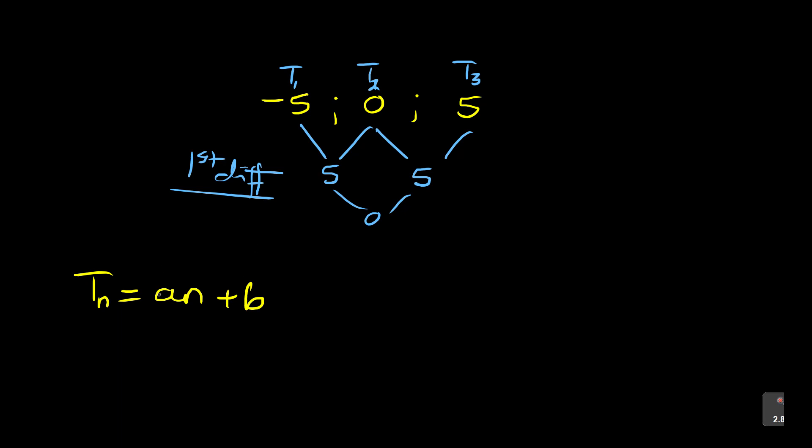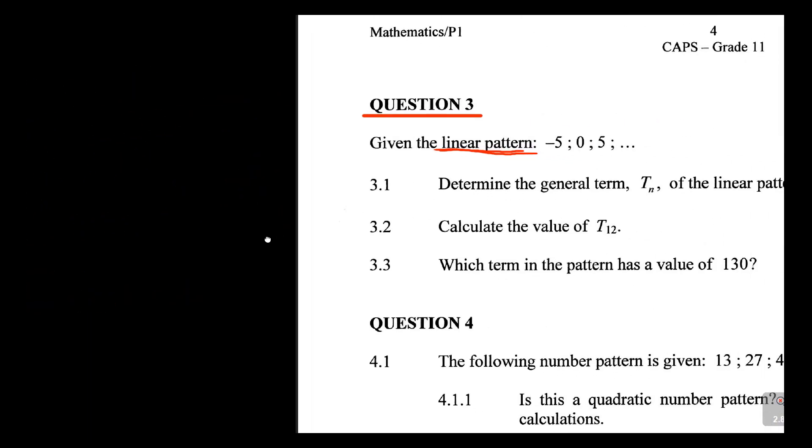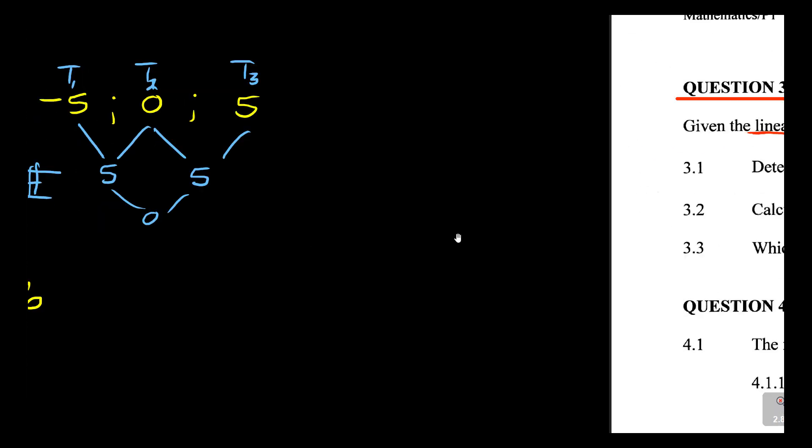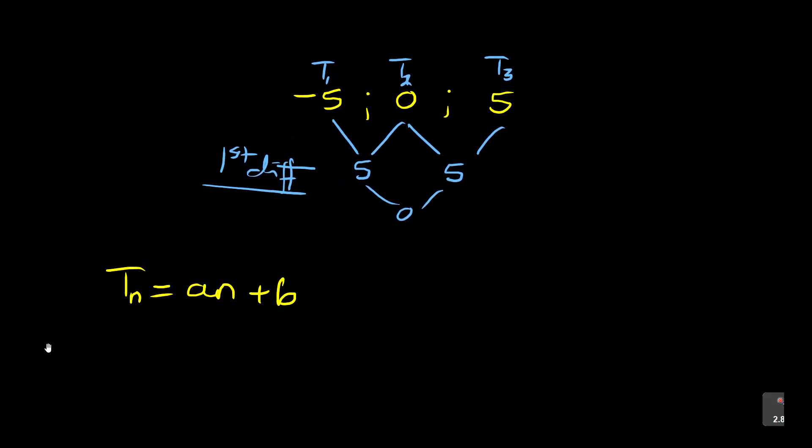Now what do you need? You need to say find the general term. I think the question here says we need to determine the general term TN of the linear pattern. This is 2 marks. One thing I want you to always remember is whenever you're looking at the general pattern, that first difference is equal to A. So you've got TN now is equal to 5N plus B. Then the next thing is for you to find B.